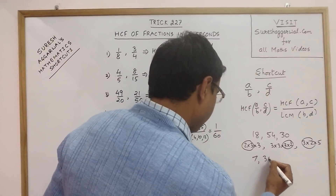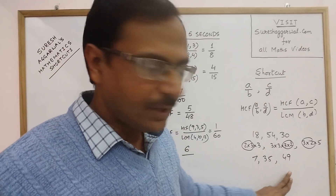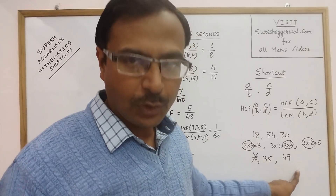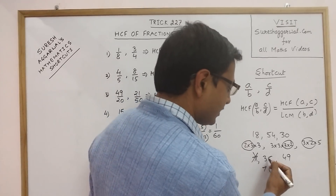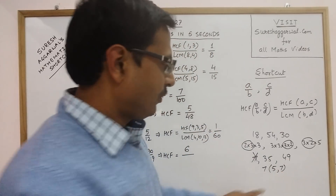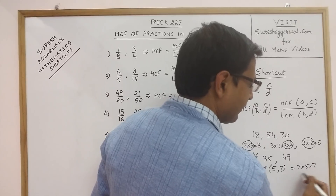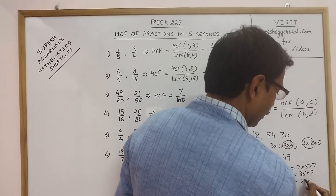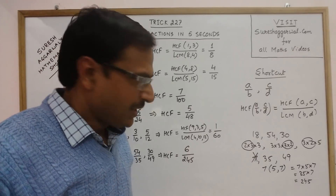Now find the LCM of the denominators 7, 35, and 49. Since 7 divides both 35 and 49, neglect 7 and keep only 35 and 49. Dividing by their common factor 7: 35÷7 = 5 and 49÷7 = 7. Since 5 and 7 are prime numbers, the LCM is 7×5×7 = 35×7 = 245.